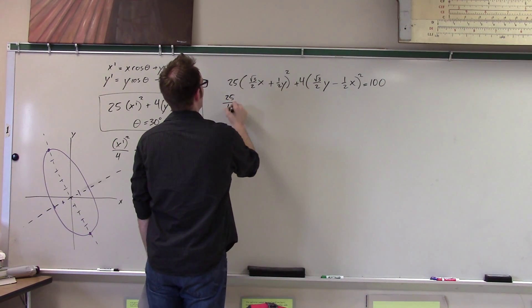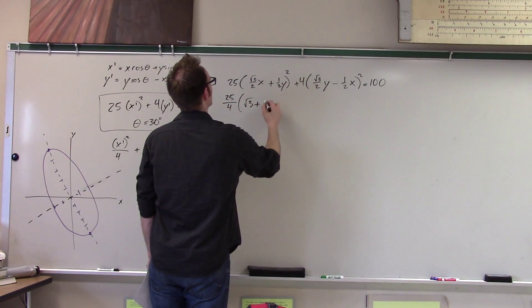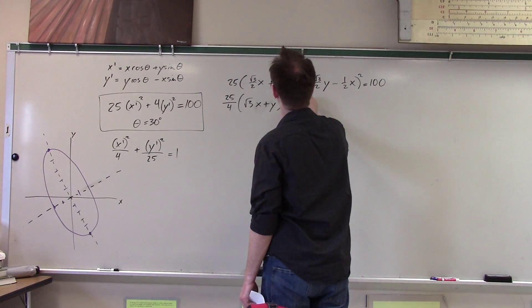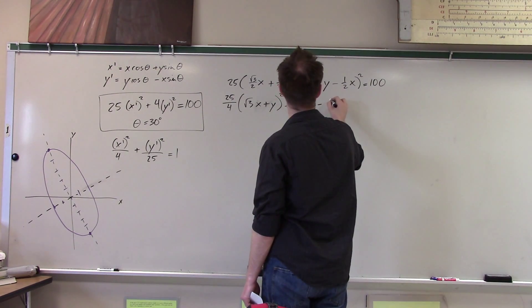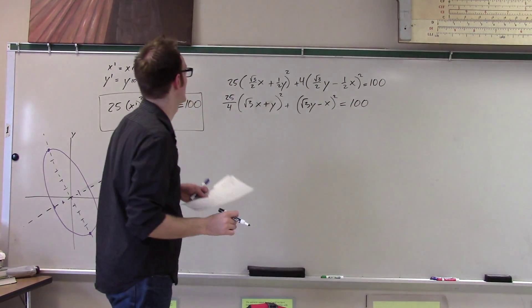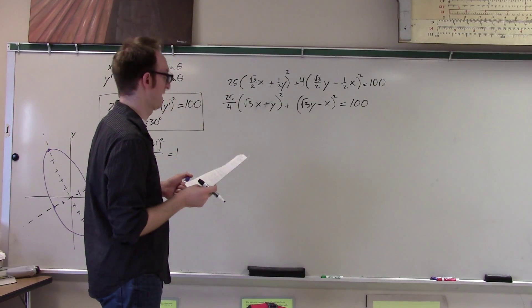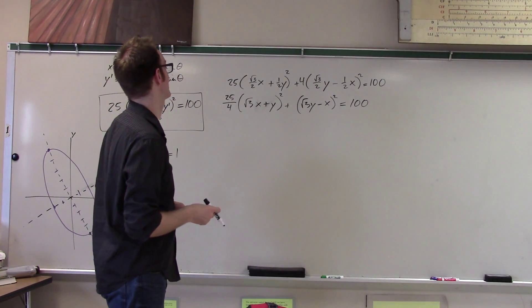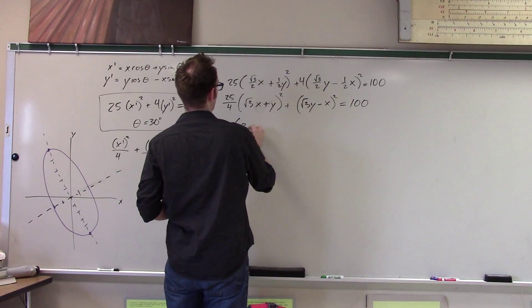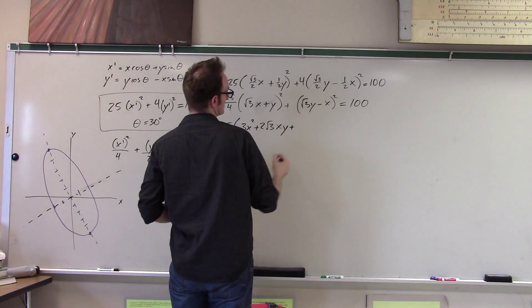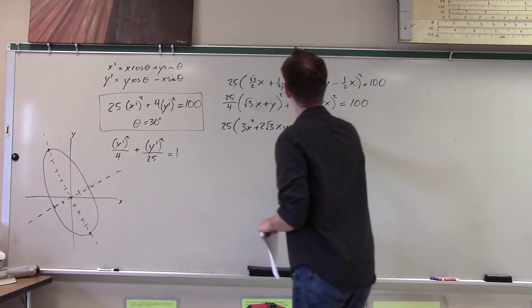I think I'll pull out the 4. Root 3x plus y. And we get 4 divided by 4, so that just becomes 1. So root 3y minus x squared equals 100. And I can even multiply through by 4. I think that seems like a good idea.